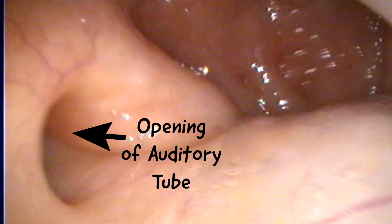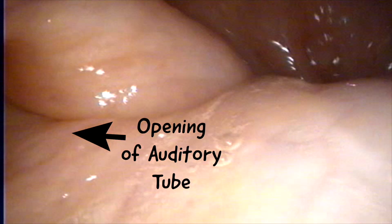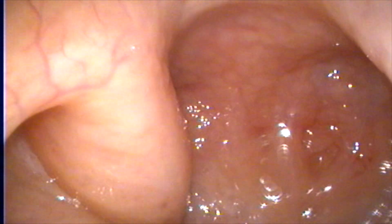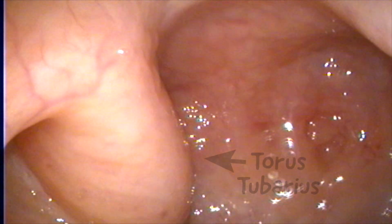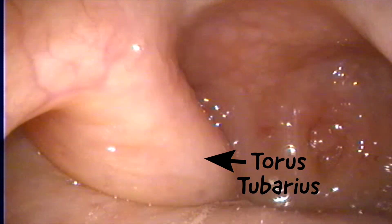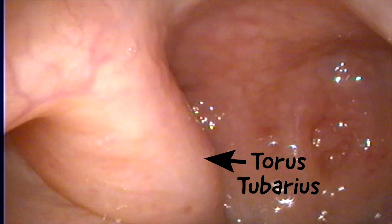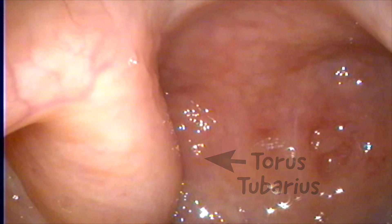We are now approaching the opening of the auditory tube on the lateral wall. This is also known as the eustachian tube, and just posterior to this is the torus tubarius, which is known as the cushion of the auditory canal. It is a mucosal elevation in the lateral aspect of the nasopharynx.